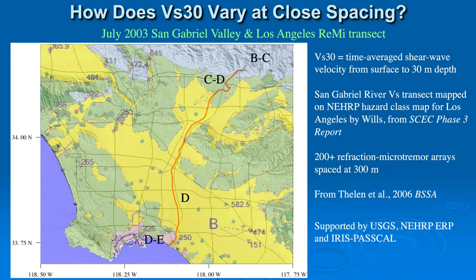We start with a 60-kilometer long series of 200 surface wave measurements of shear velocity down to depths of about 100 meters. We're going to look at the time-average shear wave velocity from the surface to 30 meters depth first — I'll call that VS-30. This is the July 2003 San Gabriel Valley in Los Angeles refraction microtremor transect, consisting of 200 and more refraction microtremor arrays spaced at 300 meters. West and Allen published these in BSSA in 2006.